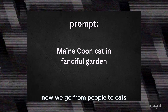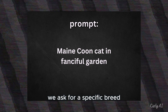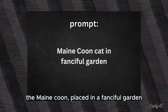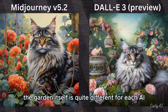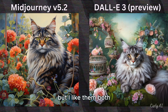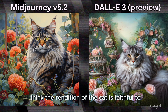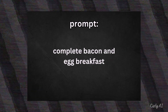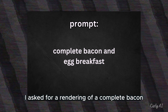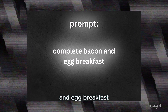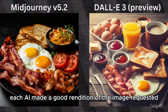Now we go from people to cats. We ask for a specific breed, the Maine Coon, placed in a fanciful garden. The interpretation of the garden itself is quite different for each AI, but I like them both. I think the rendition of the cat is faithful to the Maine Coon breed in both AIs. Ignoring the admonition we saw on the pig's sign, I asked for a rendering of a complete bacon and egg breakfast. Each AI made a good rendition of the image requested.